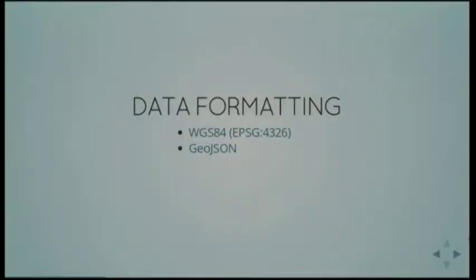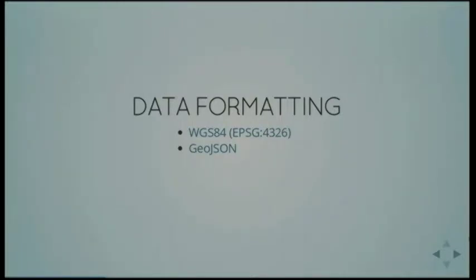The next thing is GeoJSON — a standard format for encoding basic geographical data and non-geo attributes for simple things like lines and polygons. The reason I've chosen to use this is because it's supported well in MongoDB, and MongoDB also uses WGS 84 by default. That's why I've chosen those particular standards.